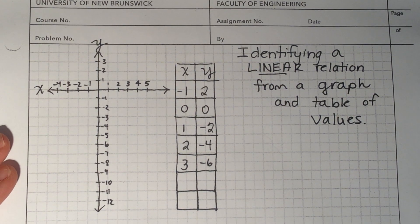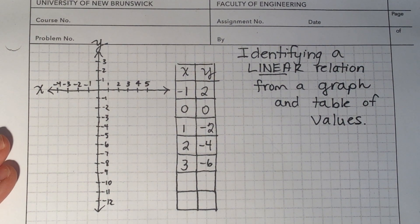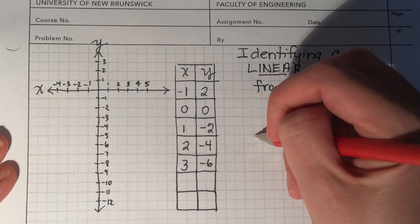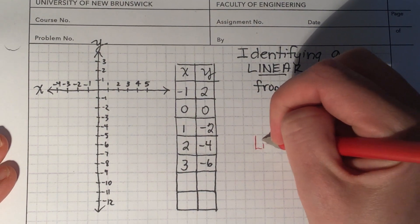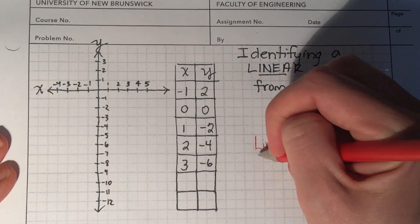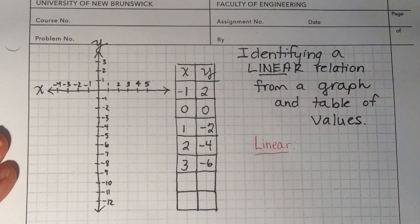This video is going to show you how you can identify a linear relation from either looking at a graph or looking at a table of values. So starting off, let's define what it means for something to be linear.